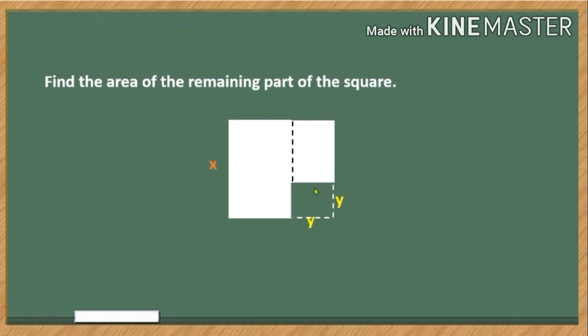...is equal. So we can write here y. Okay, so this measures also y unit. How do we get this expression? Take note that this side here originally measures x unit.